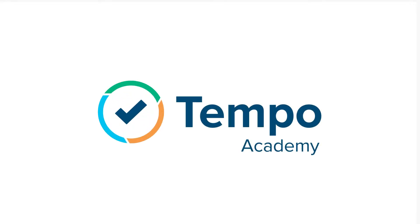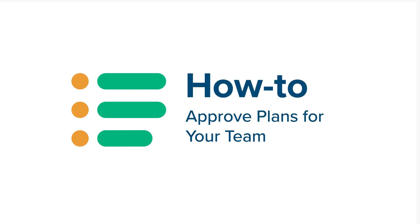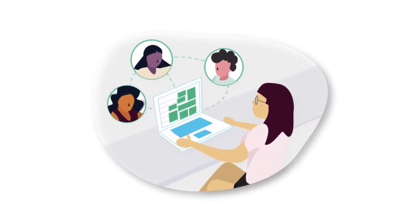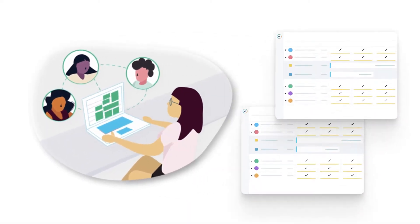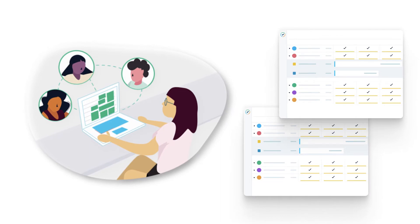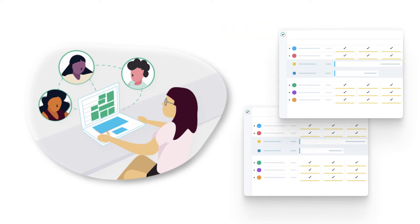You have an important job to do: approve your team's vacation plans. But how do you do that? As a manager or team lead, your duties usually include approving plans for your team members. This is usually for their vacations and other planned time off, but it can be for any planned time that requires approval.